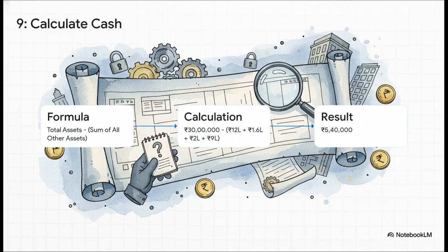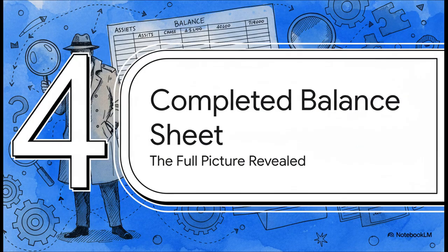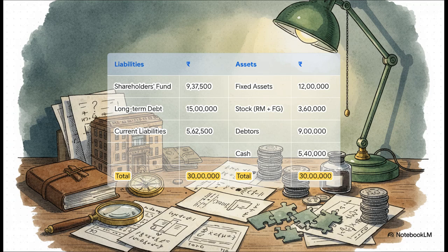Let's take a moment. We've uncovered all of these individual pieces. Now, let's assemble them into the final coherent picture. This is the moment of truth. It's the ultimate reward for your careful, step-by-step detective work. And there it is. Just look at that. A perfectly balanced balance sheet.